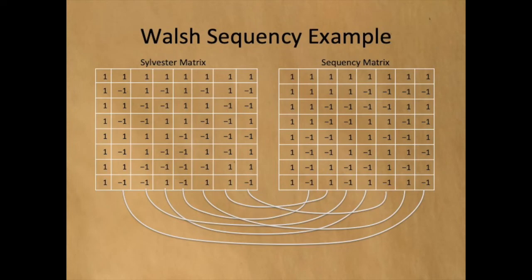This diagram shows how to convert the Sylvester matrix on the left into the Walsh matrix on the right. Note that the first column is the same. The second column of the Sylvester matrix becomes the last column of the Walsh matrix. The third column of the Sylvester matrix becomes the fourth column of the Walsh matrix, and so on.